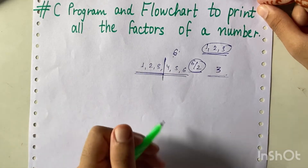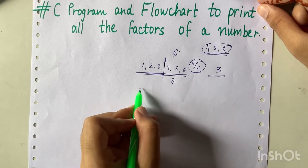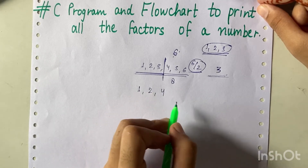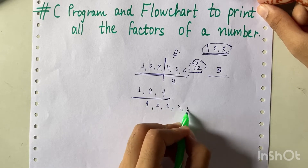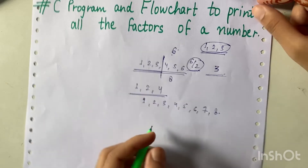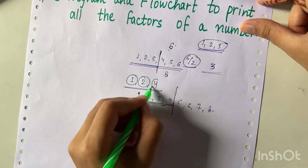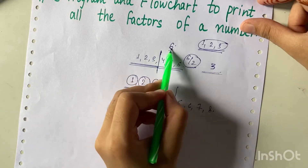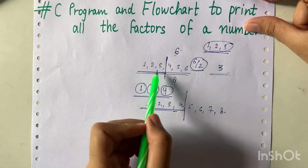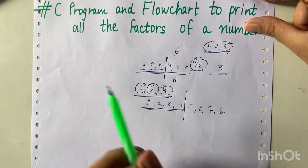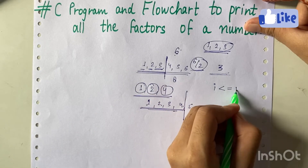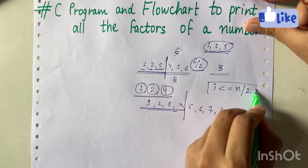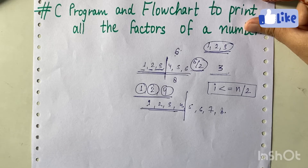We have to run the loop till i less than or equal to n divided by 2, where n is the number the user will enter. Let's verify with another example: for n equals 8, the factors are 1, 2, and 4, which also lie in the first half of the number. So the n/2 logic works for factors of every number. The loop condition will be i <= n/2.